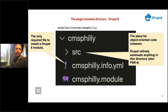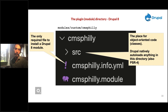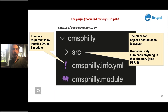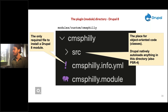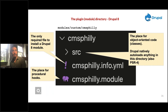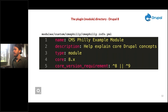The src directory is the place for object-oriented code and classes. Drupal natively autoloads anything in this directory using the PSR4 specification to map namespaces to file directories — it doesn't require Composer to do this. The .module file, familiar to anyone who's built custom Drupal modules in Drupal 7 or earlier, is the place for procedural hooks.